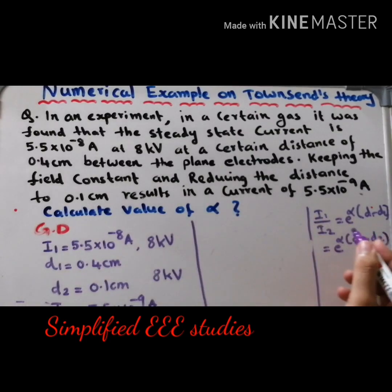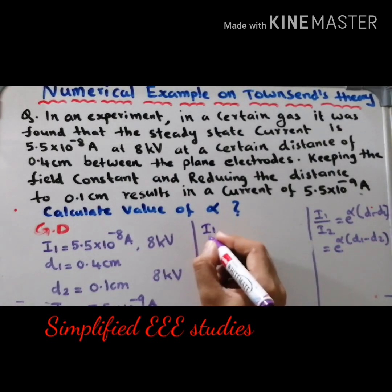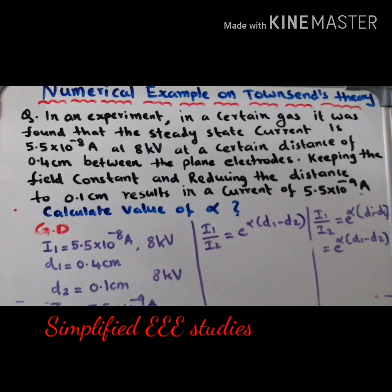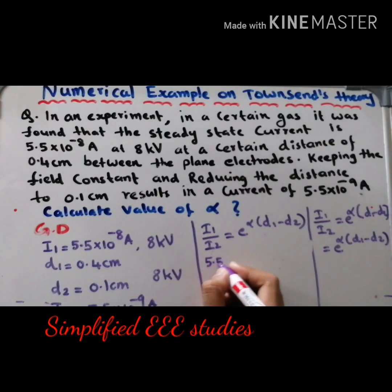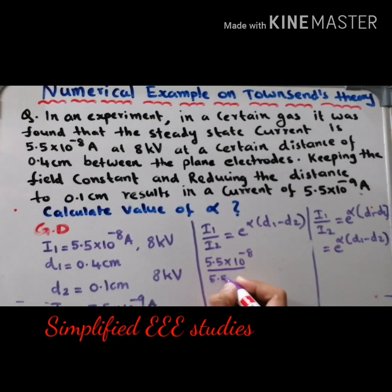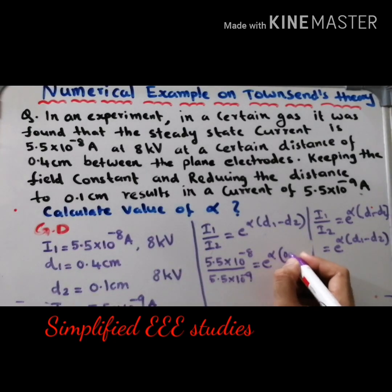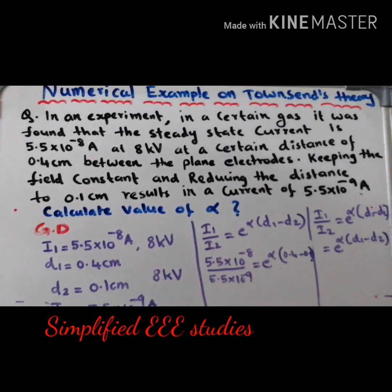So I1/I2 = e^(α·(D1 − D2)). Substituting: (5.5 × 10⁻⁸) / (5.5 × 10⁻⁹) = e^(α·(0.4 − 0.1)). The 5.5 values cancel. For the powers of 10: 10⁻⁸ / 10⁻⁹ = 10^(−8+9) = 10. So we get 10 = e^(α × 0.3).